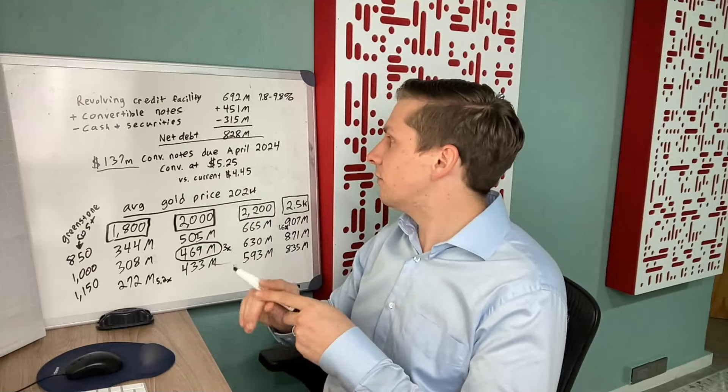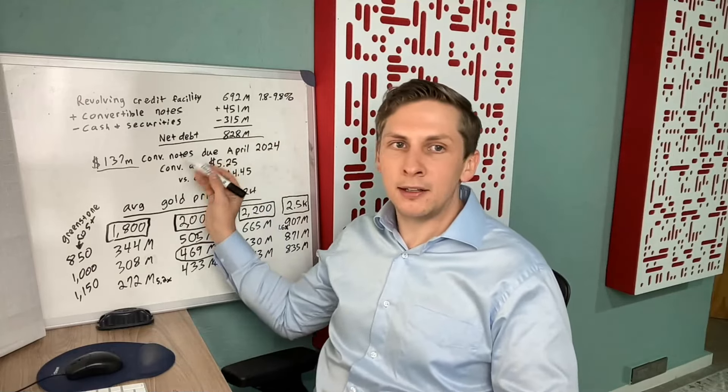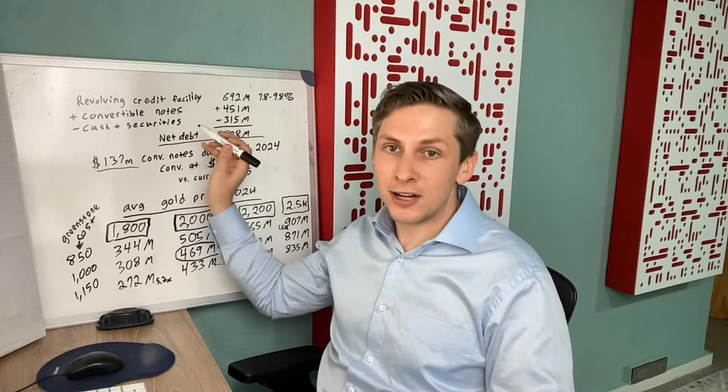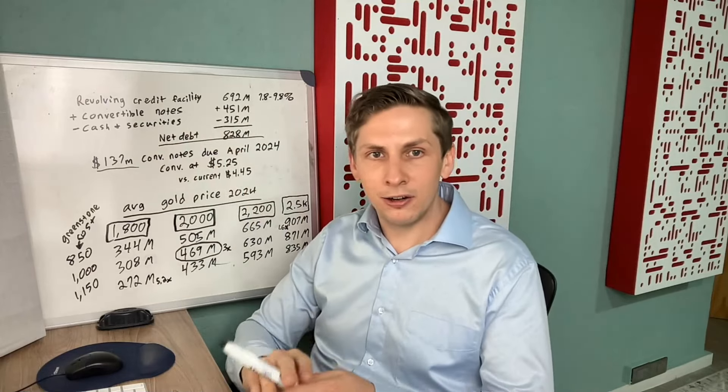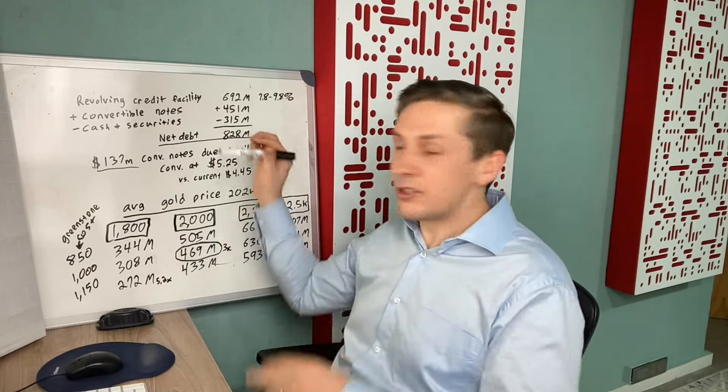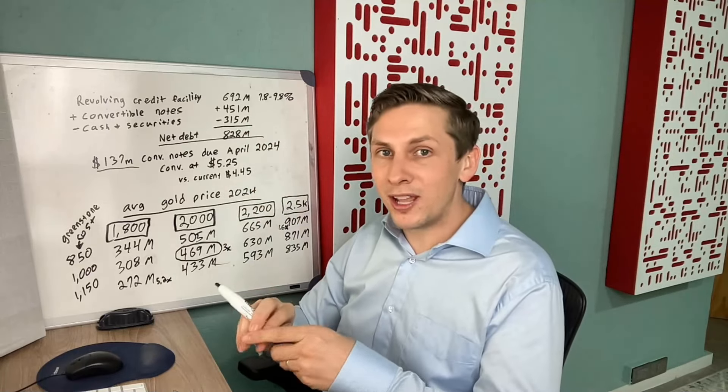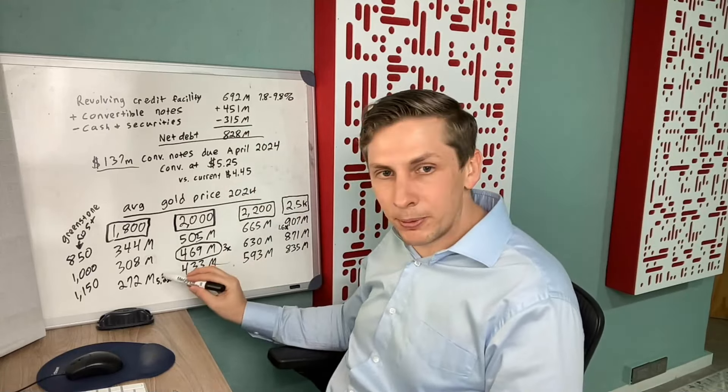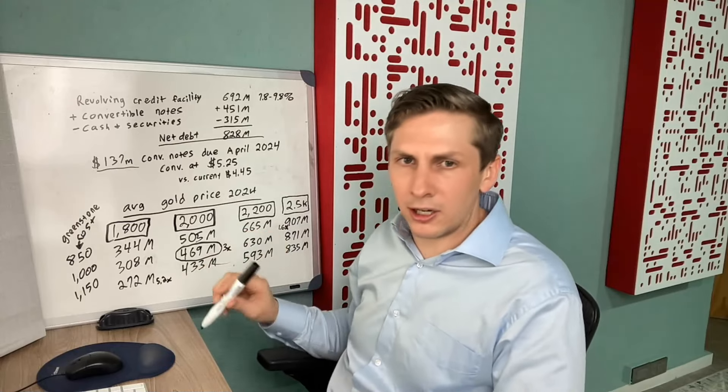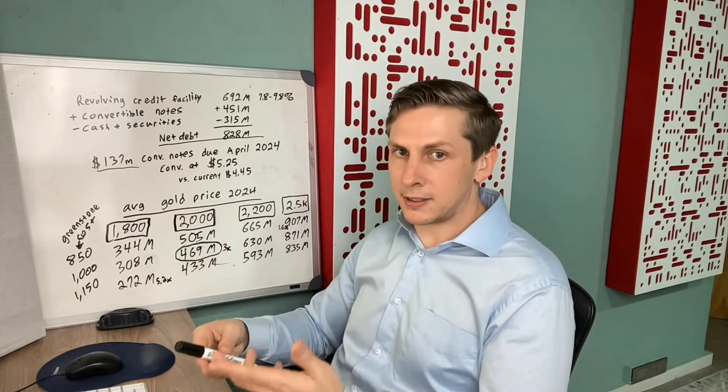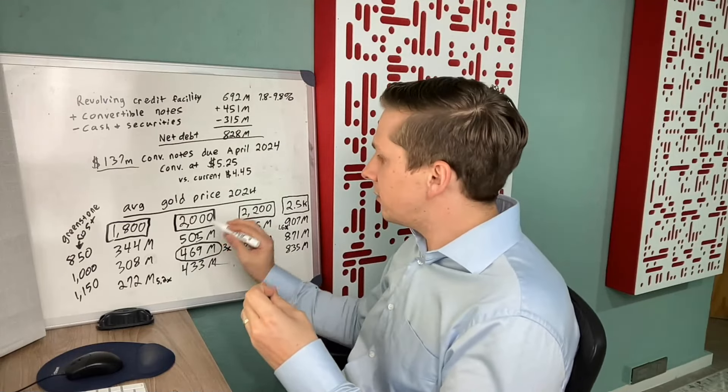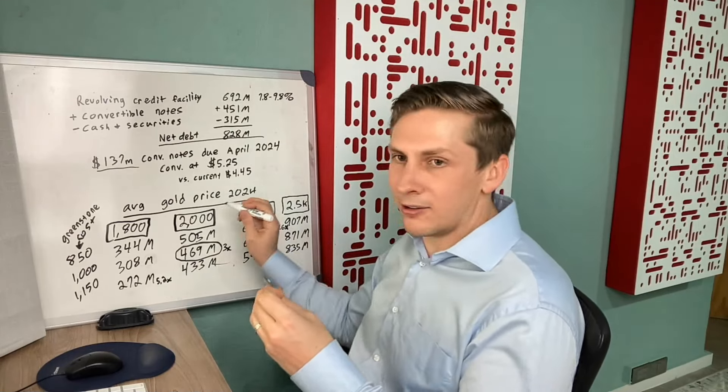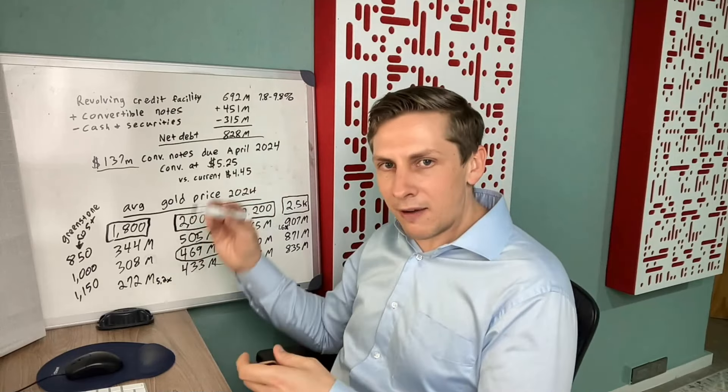To get the net debt, you then have to subtract the cash and marketable securities for a net debt of $828 million. Now when you see that they have debt of $828 million, these multiples over here that we talked about earlier start to make more sense because basically they would have to use that cash flow to pay down debt, and then after we pay down debt we should see these multiples increase.